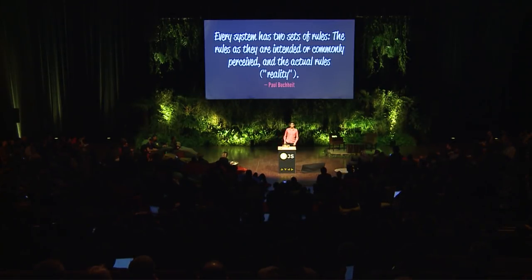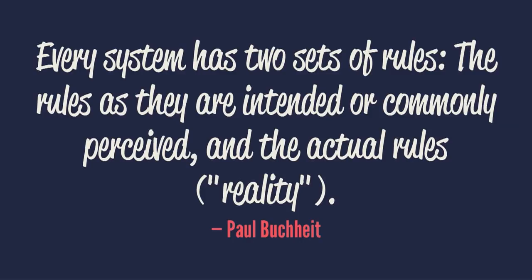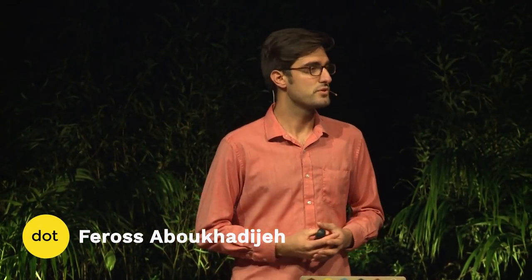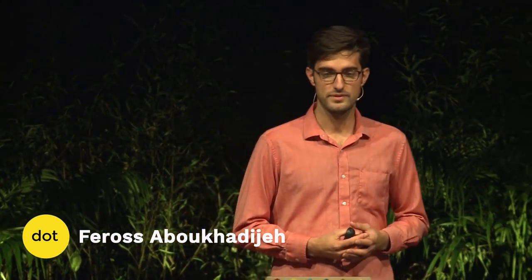Every system has two sets of rules: the rules as they are intended, or commonly perceived, and the actual rules, also known as reality. In most complex systems, the gap between these two sets of rules is huge.